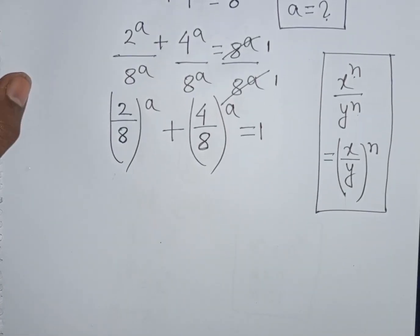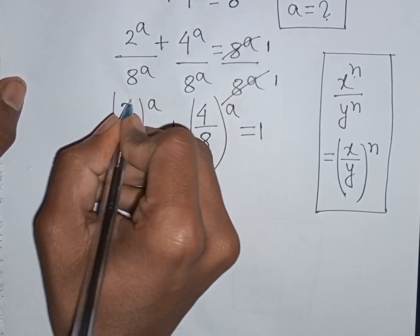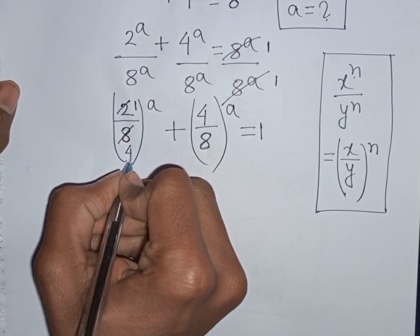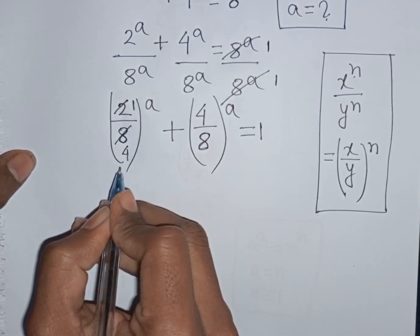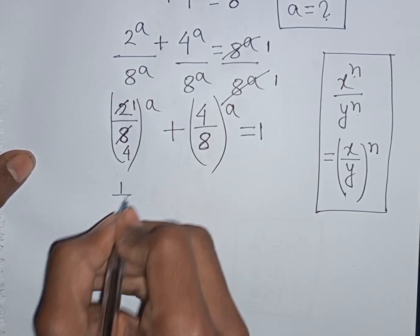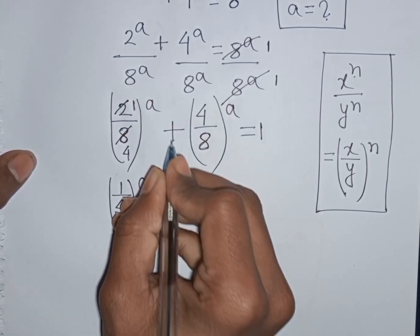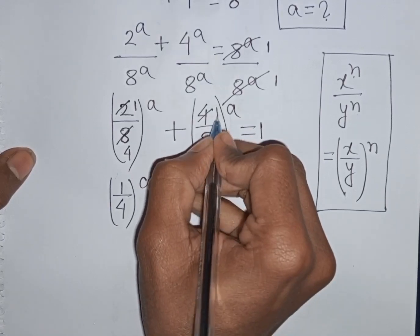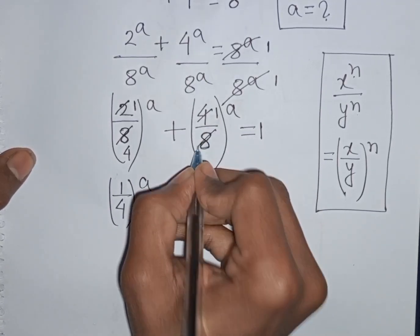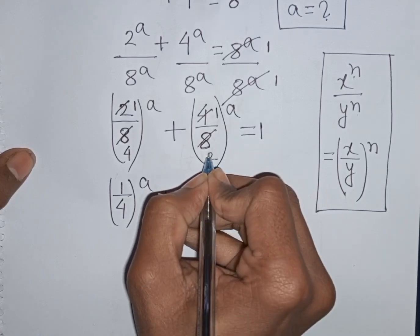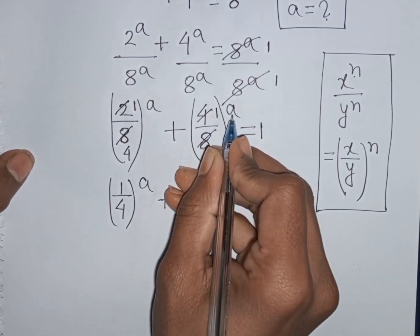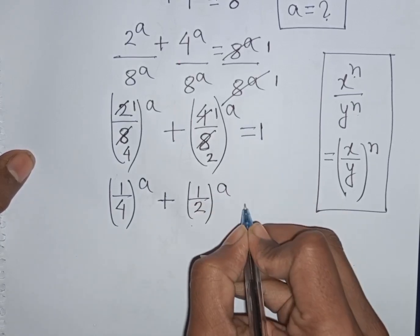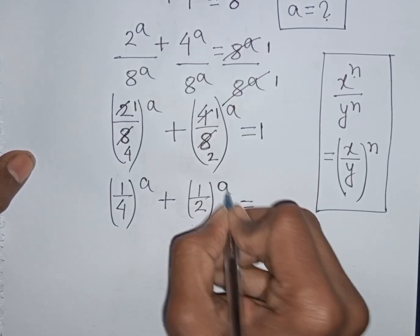Now 2 divided by 8 means it will be 1/4. So (1/4) power A. Then 4 divided by 4 means 1, and 8 divided by 4 means 2. So we have (1/4) power A plus (1/2) power A is equal to 1.